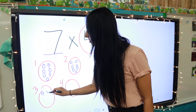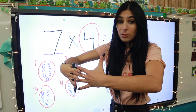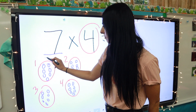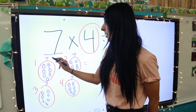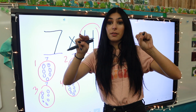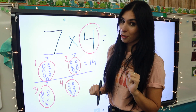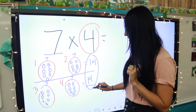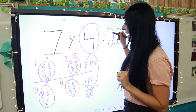Inside each group I put one, two, three, four, five, six, seven - seven in each circle. Because this is multiplication, we add all those little circles up. We're essentially doing seven plus seven plus seven plus seven. Seven plus seven is fourteen, so those two circles are fourteen, and the other two circles are also fourteen. Fourteen plus fourteen: four plus four is eight, one plus one is two - our answer is twenty-eight.